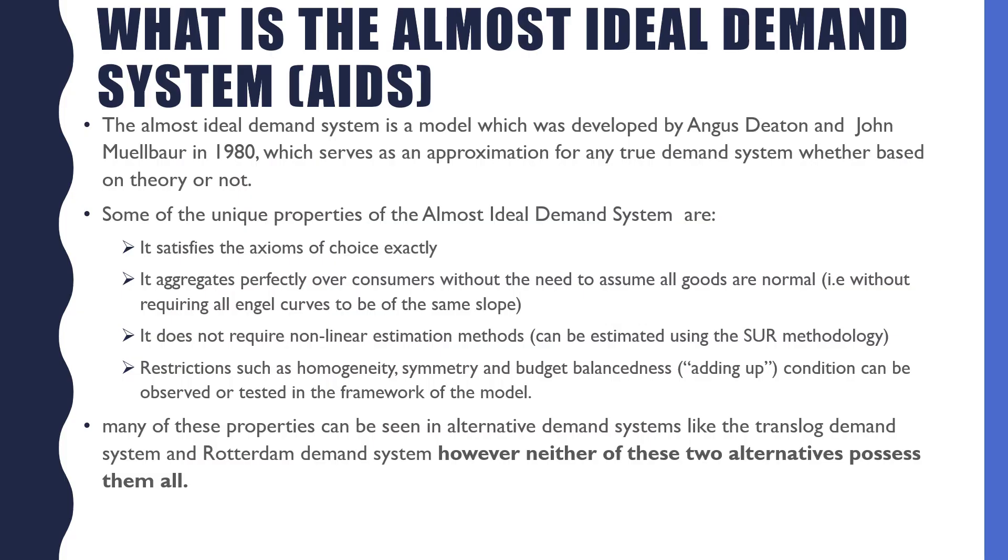What is the Almost Ideal Demand System? The Almost Ideal Demand System is a model which was developed by Angus Deaton and John Muehlbauer in 1980, which serves as an approximation for any true demand system, whether based on theory or not.